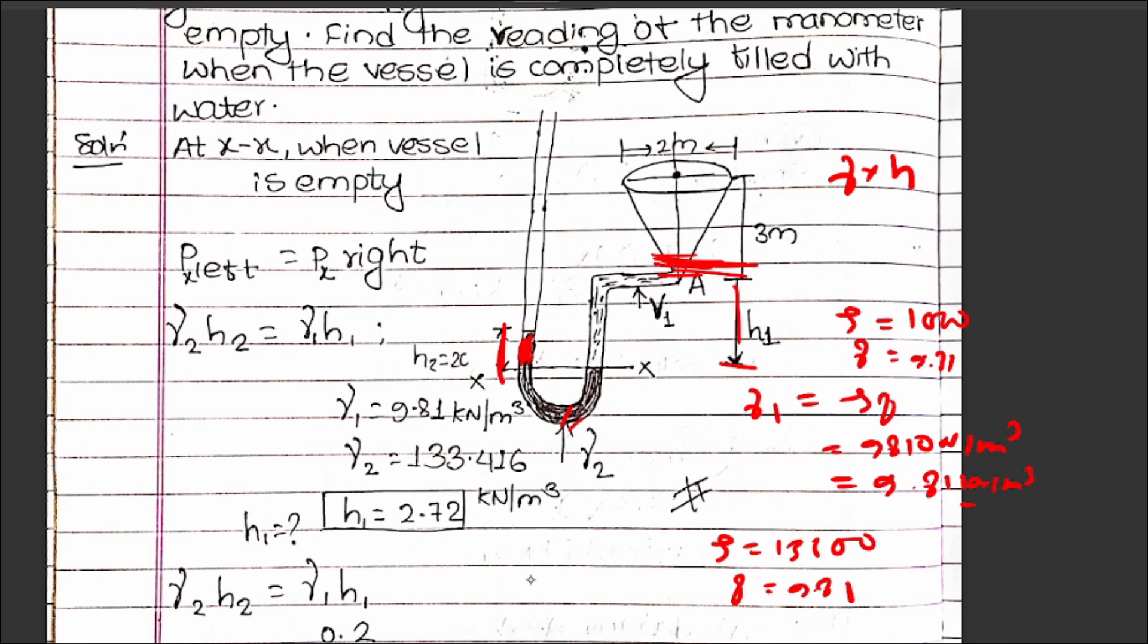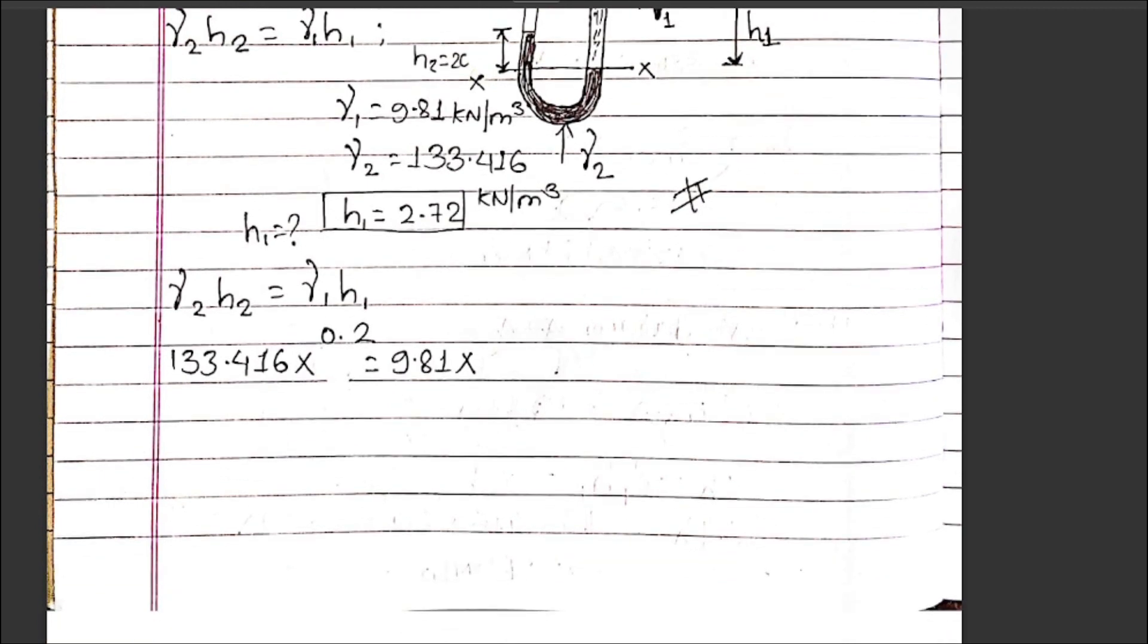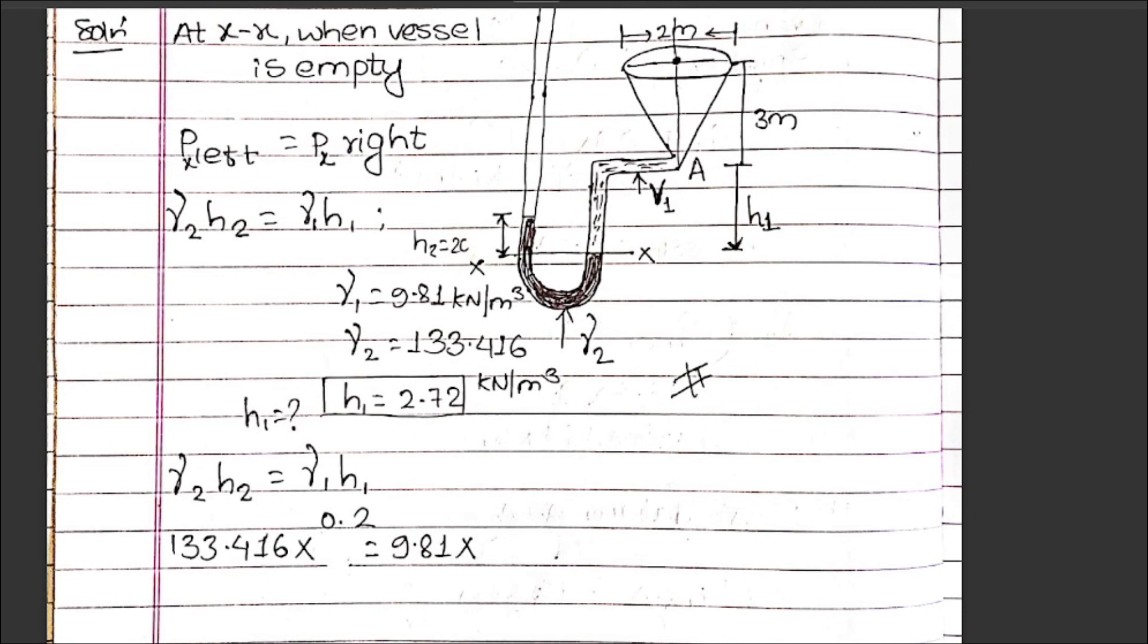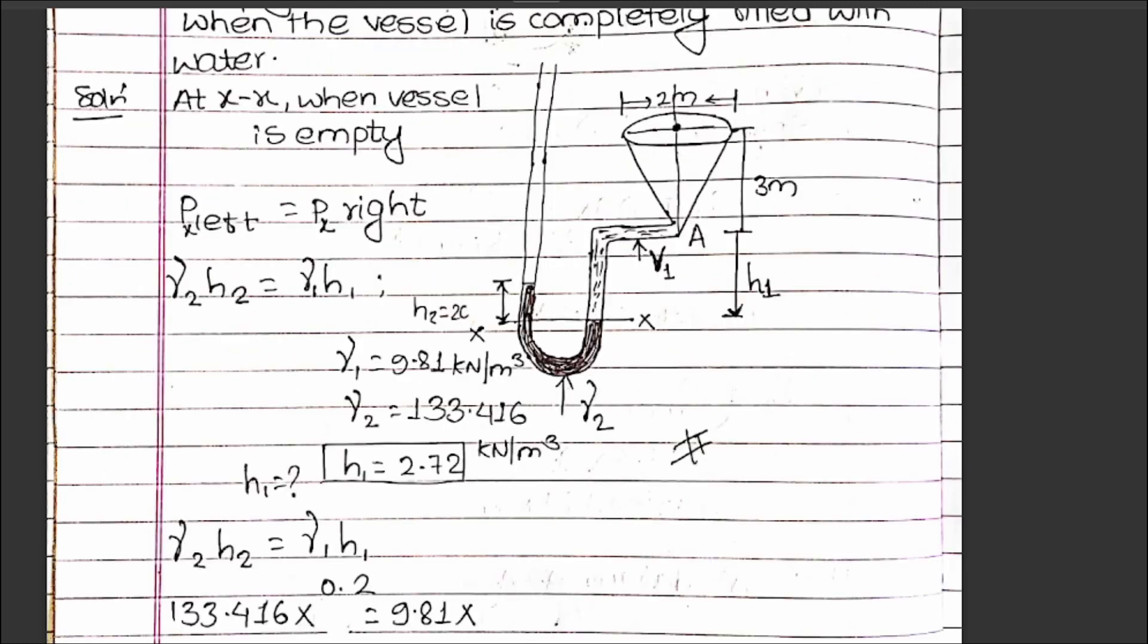So 133.416 times 0.2 equals 9.81 times h₁. Solving this gives h₁ equals 2.72 meters for the first case.